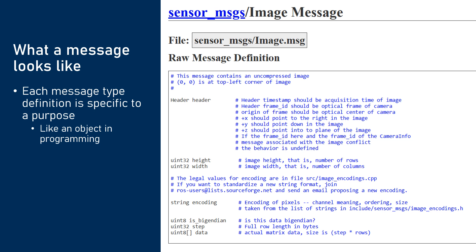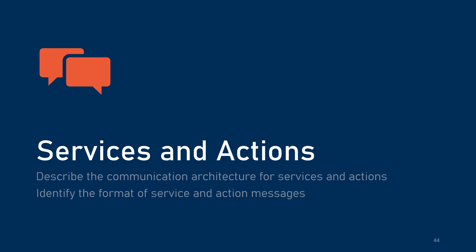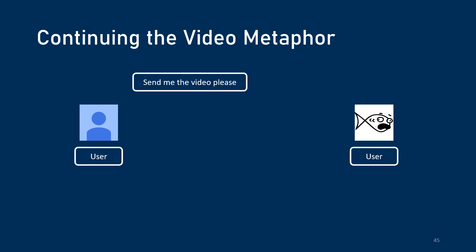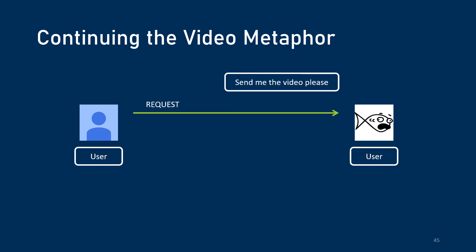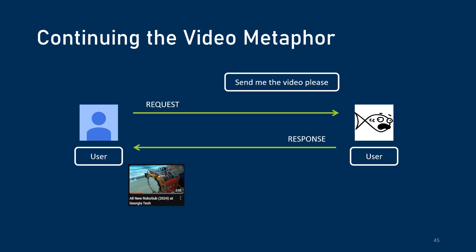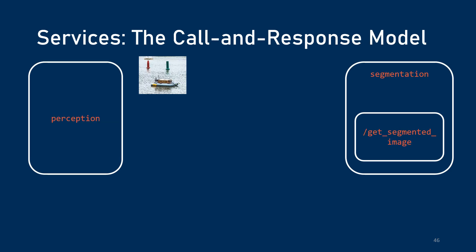The PubSub architecture is very powerful, but there are some situations where different paradigms work better — and that's where services and actions come in. Continuing the video metaphor: maybe a video isn't meant to be shared with the world, or maybe it's a specific request for a very specific video. A user could message me to send a video — that's a request — and then I could just directly send them the video back — that's a response. This direct messaging model is what ROS services use.